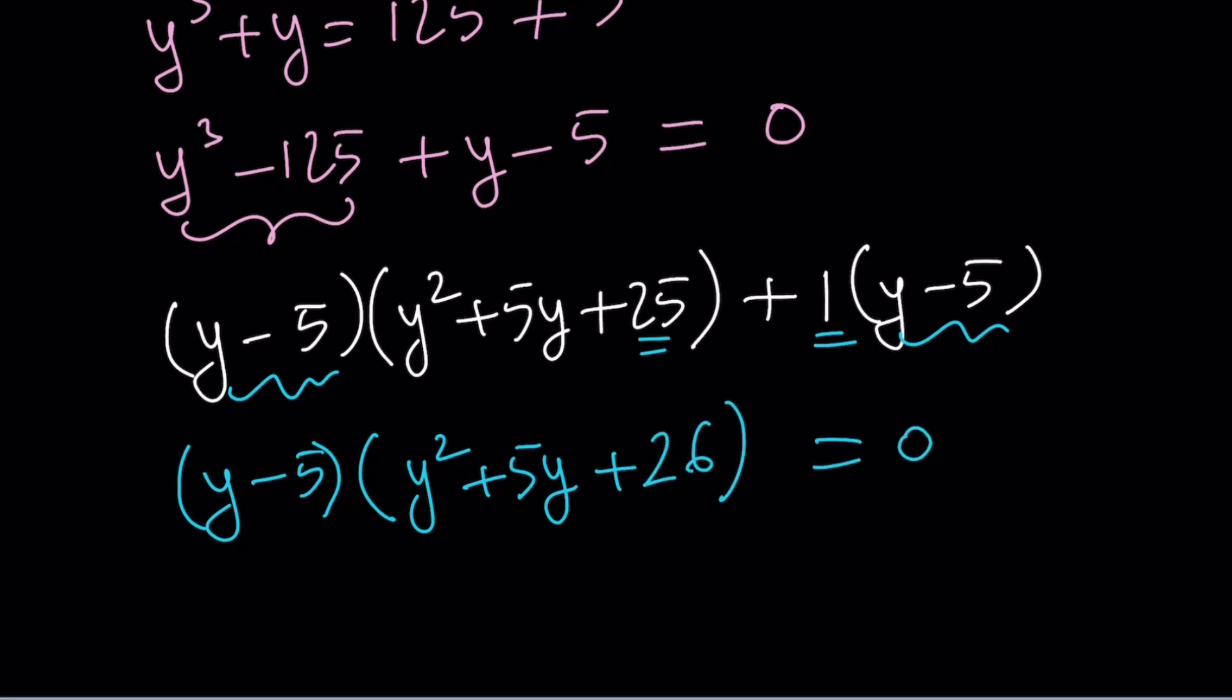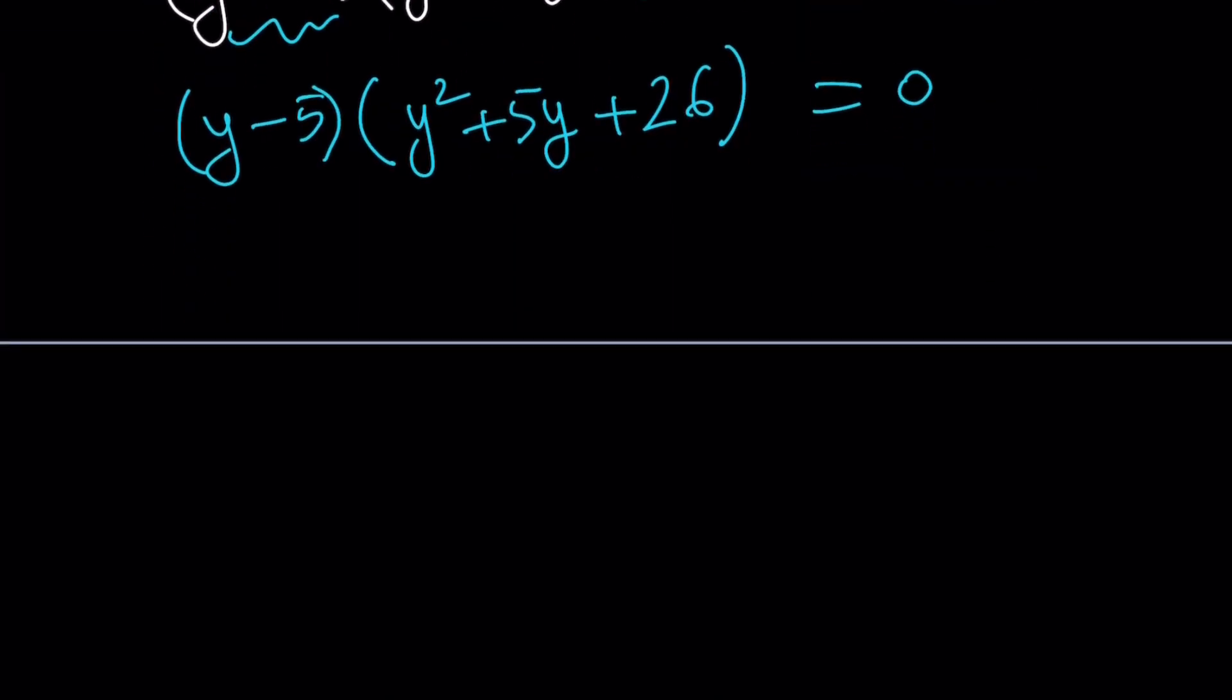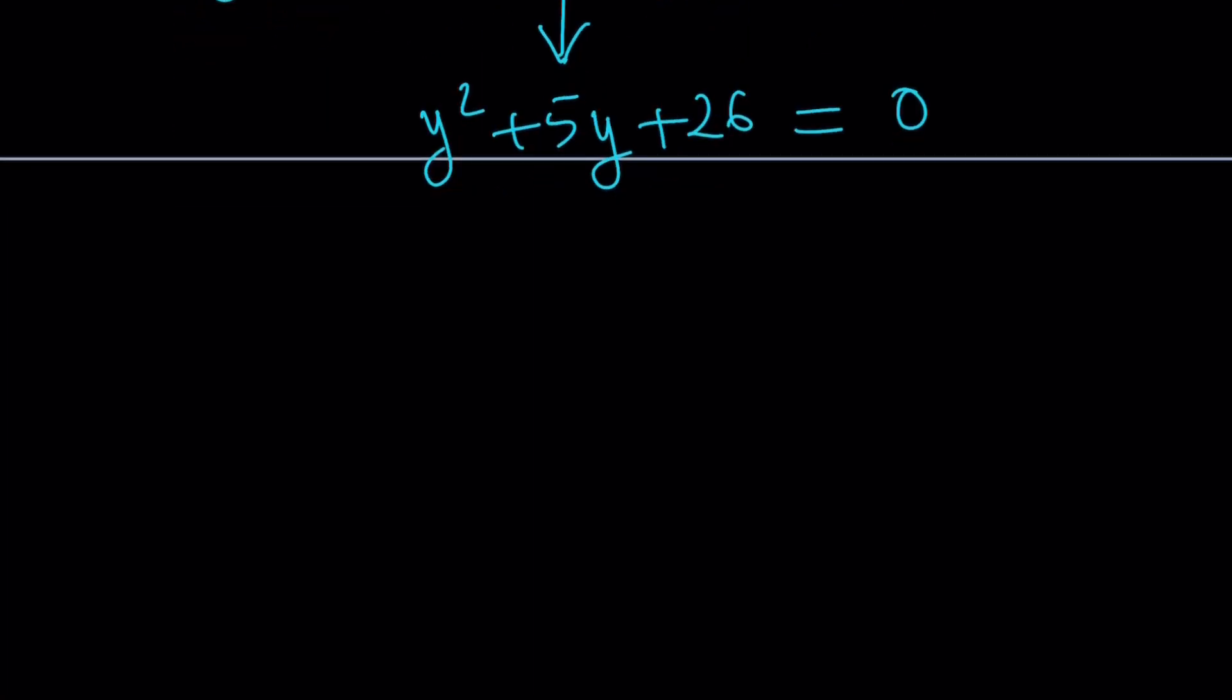Now, we already know y equals 5 is a solution. We don't need to redo it. But let's go ahead and focus on the quadratic. This quadratic can be solved by using the quadratic formula. You can also do... It's not factorable, by the way. You can also do completing the square, but I don't recommend it, especially because 5 is an odd number. Just use the formula. It's the same thing.